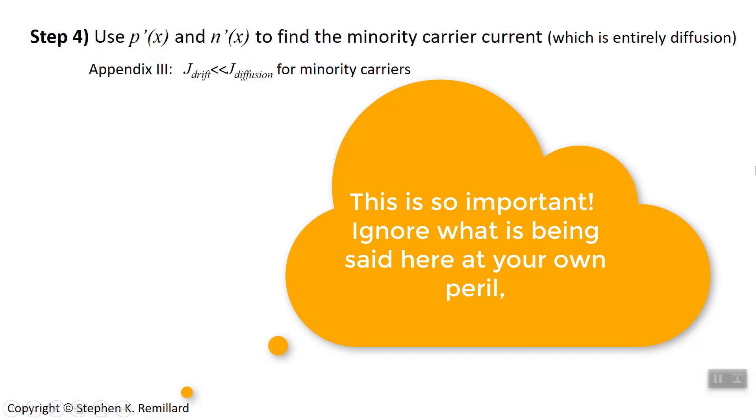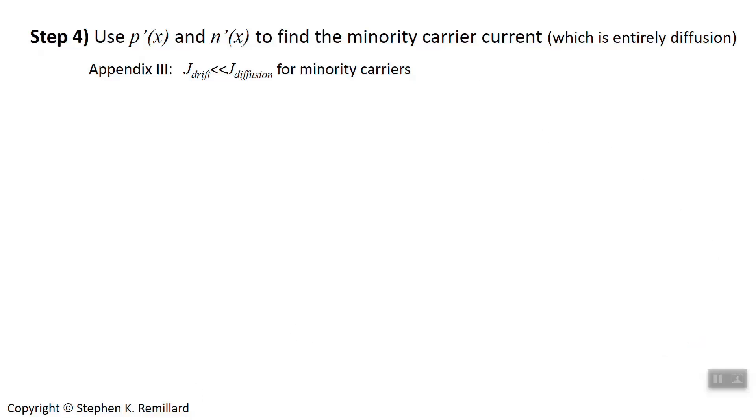All right, so let's go to step four, which uses those expressions now for p prime and n prime as a function of x to find the minority carrier current. Which, by the way, it's entirely by diffusion. I'm not going to work through that proof either because it's done for you. It is stated.